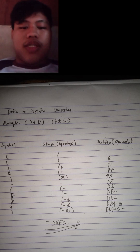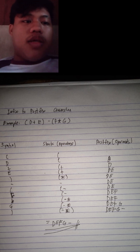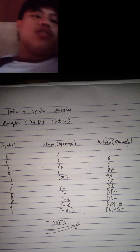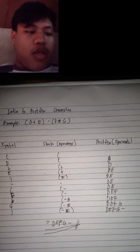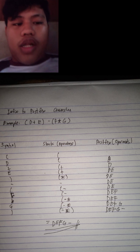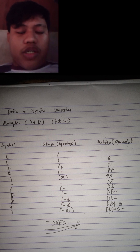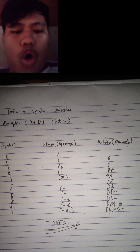Now this is my example of infix to postfix conversion. The example is: open parenthesis D plus E close parenthesis minus open parenthesis F times G close parenthesis. You will put the symbol, and last is postfix.